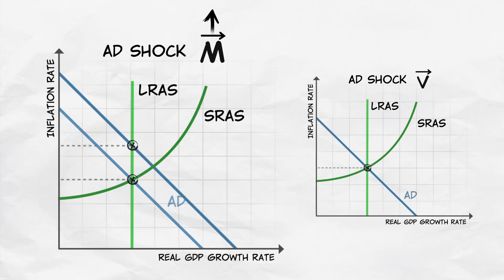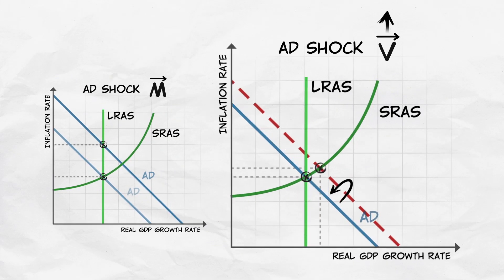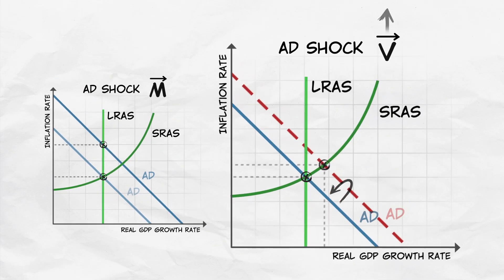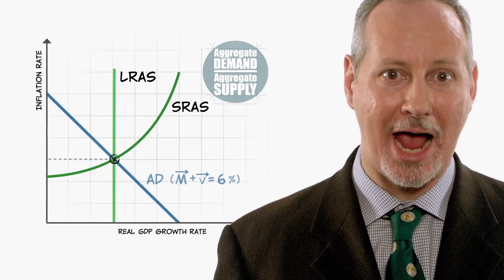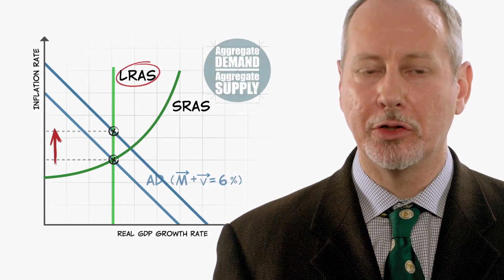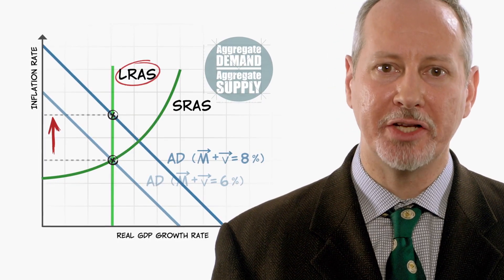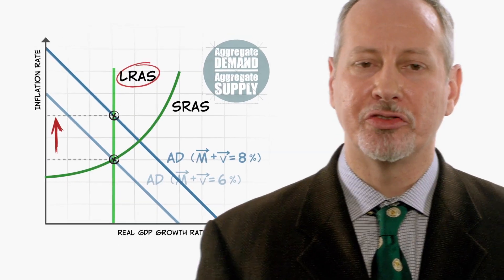So changes in M and V shift the aggregate demand curve in slightly different ways. The money supply growth rate can be increased or decreased permanently, but changes in V are always temporary. The best way to remember this is that in the long run, we have to be on the long-run aggregate supply curve, and in addition, in the long run, the inflation rate is determined by the money supply growth rate. So if the money supply growth rate hasn't changed, then the inflation rate can't change in the long run either.